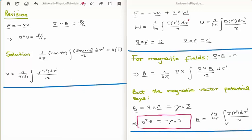Taking a step back to remind ourselves: on the top right of the screen I have written the Helmholtz theorem. An arbitrary vector field capital F can be written as the sum of the gradient of a scalar function u and the curl of a vector function w. The minus sign in front of the gradient is largely a matter of convention. I have also written down the formulas for the vector field w and the scalar field u, which are functions of the primed coordinates.